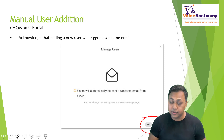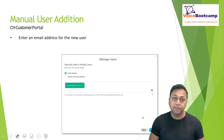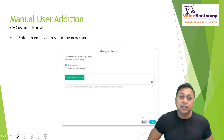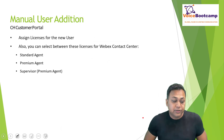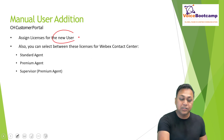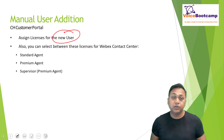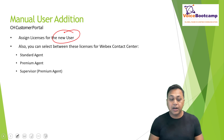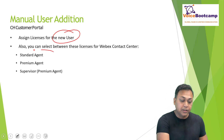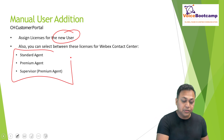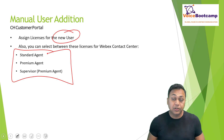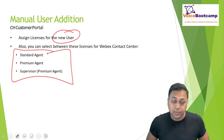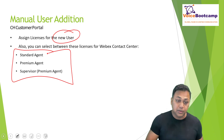If the email address is not valid, the system will not be able to send an invite for the user to change their password and settings. Enter the user ID and email address, then assign a license to the new user — specifying whether they have a Contact Center license. There are three possible license types: Standard Agent, Premium Agent, or Supervisor, which includes the Premium Agent license.